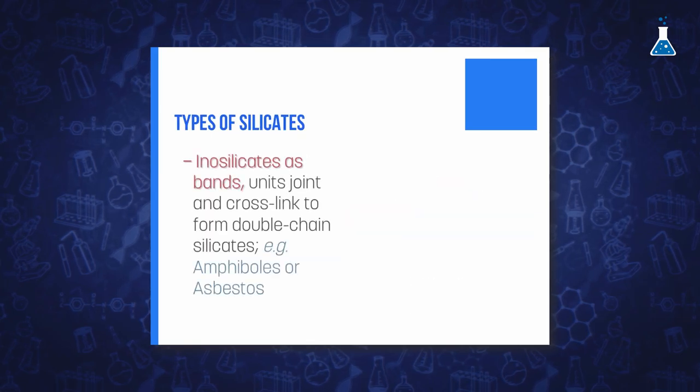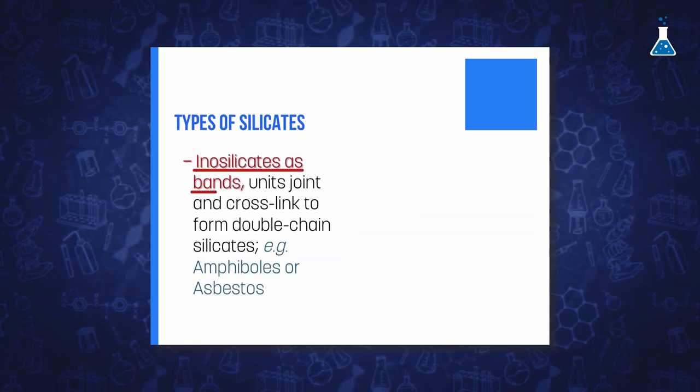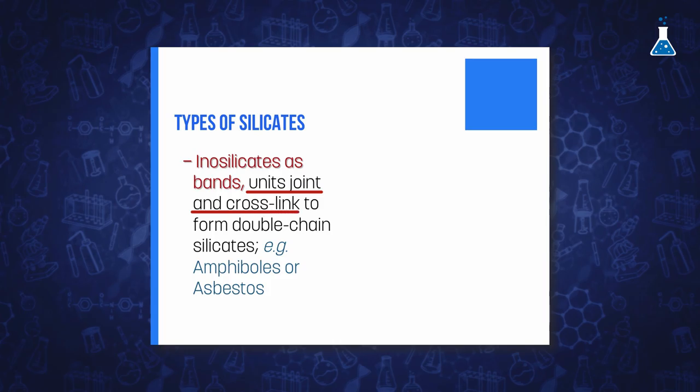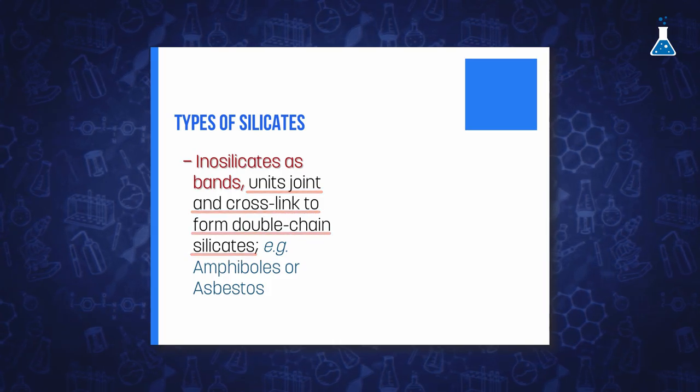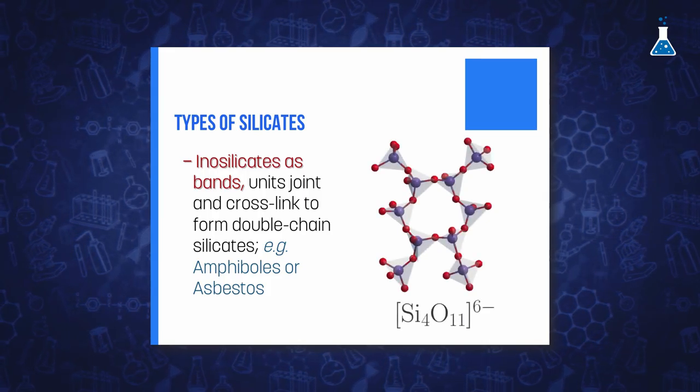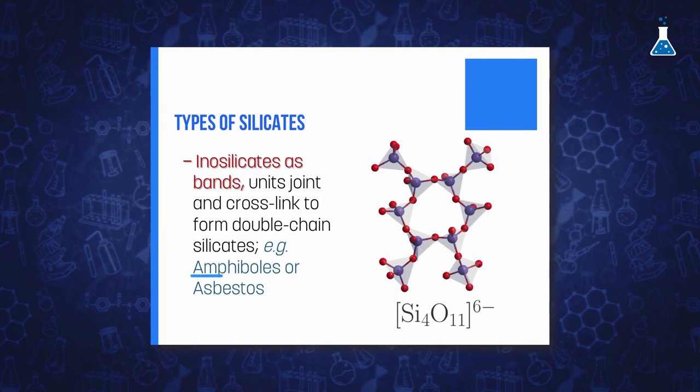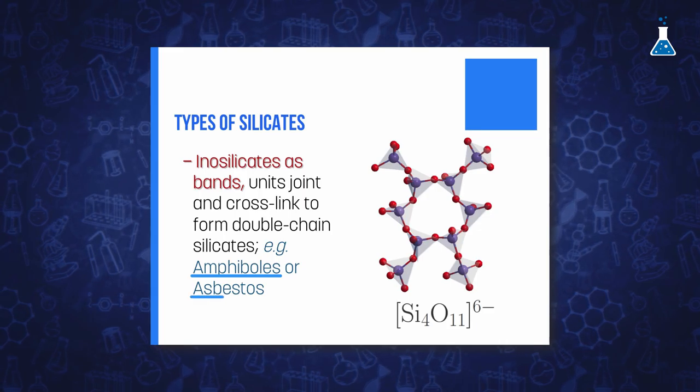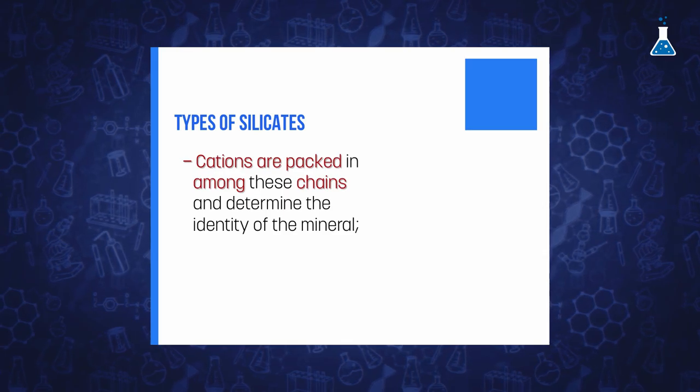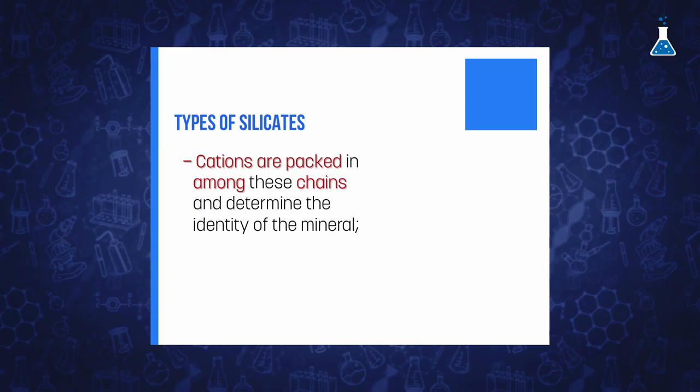Furthermore, there is another configuration for inosilicates, alternative to those of single chains, in which units can join and cross-link to form long double chain silicates with the empirical formula of Si4O11^6-. These silicates are usually referred to as inosilicates as bands, and this polymeric structure includes the family of amphibole minerals, commercially known as asbestos. In addition, the cations are packed among these chains and will determine the identity of the mineral.